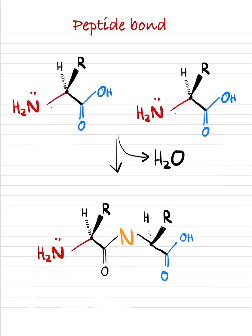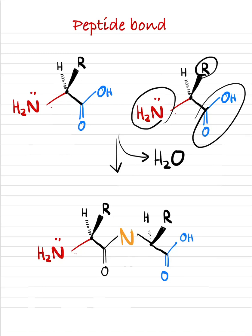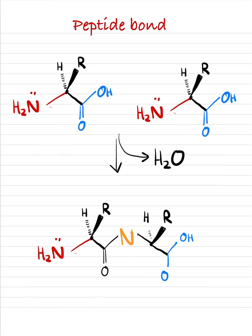Now that we understand what amino acids are, we're going to understand how amino acids bind to one another and form a polypeptide — a growing protein chain. To start off, we can identify amino acids. When we look at an amino acid, we can see a carboxyl group, an amino group, and an R group. So how are these two amino acids going to come together and form a larger polypeptide?